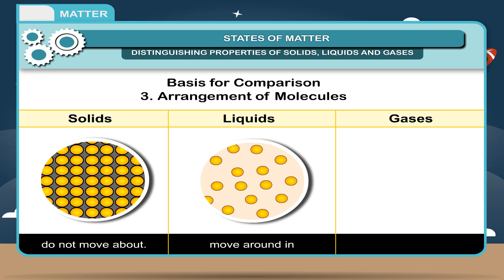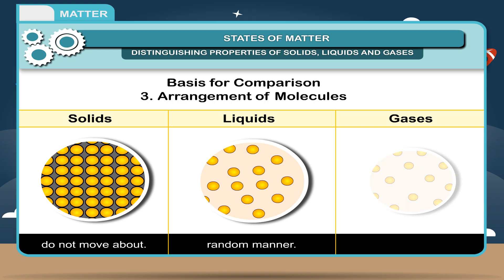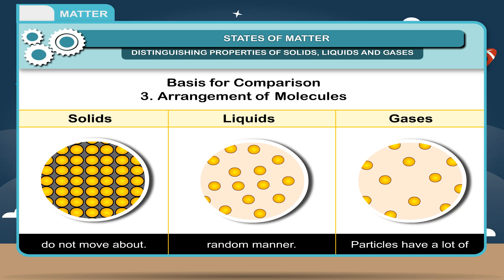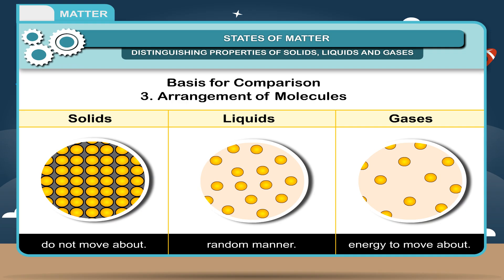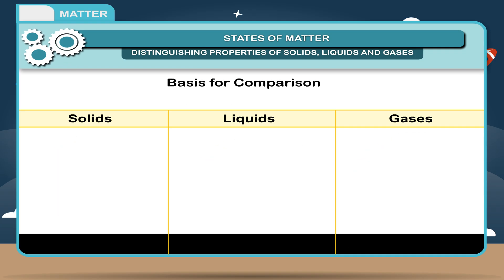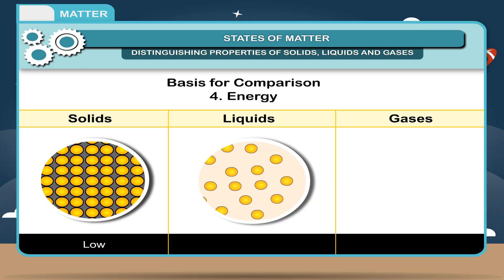But always move around in a random manner. In gases, there is no fixed arrangement. Particles have a lot of energy to move around. 4. Energy: Low for solids, medium for liquids, high for gases.